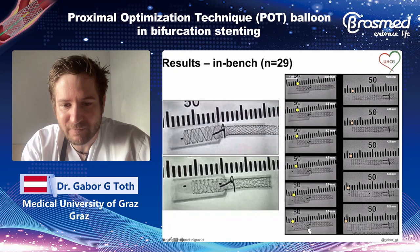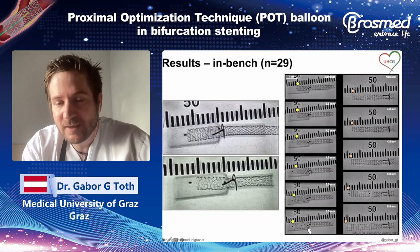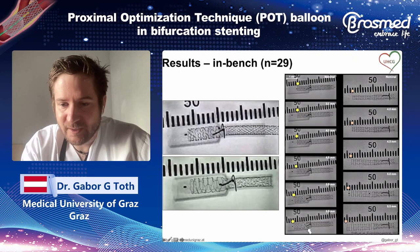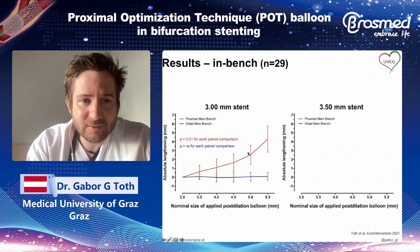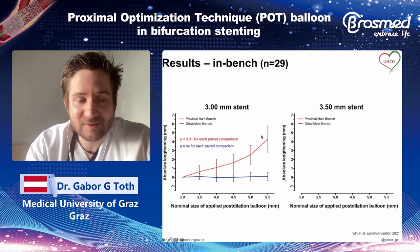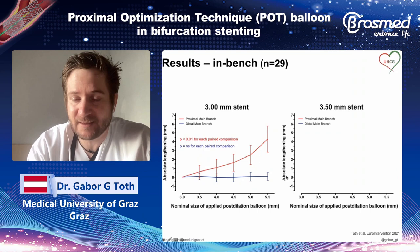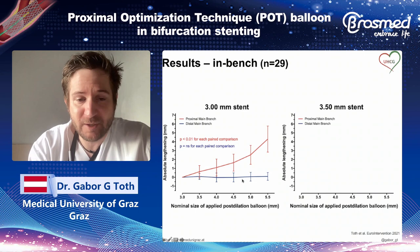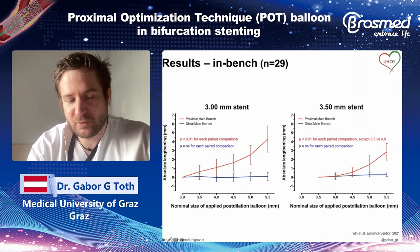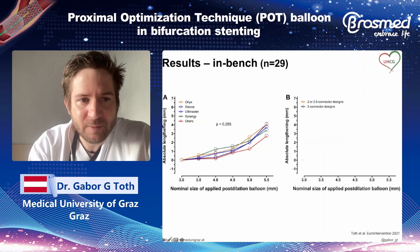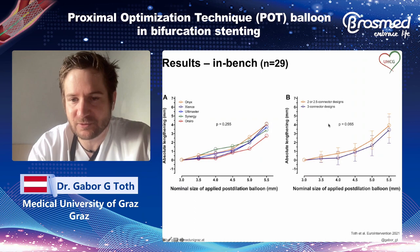Taking a 3.0 stent and overexpanding to 3.5, 4.0, 4.5, 5.0, 5.5 — there is a certain elongation. With a 3.5 stent overexpanded to 4.0, 4.5, 5.0, 5.5, it's a reasonable elongation which must be kept in mind during the PCI procedure. In bench models, the red line shows the stent length in the proximal main branch and the blue line in the distal main branch. While the distal main branch part remains stable, there is a certain elongation of the stent in the proximal main branch — true for both 3.0 and 3.5 platforms, and across different stent brands with two or three connector designs. It's a quite uniform observation.